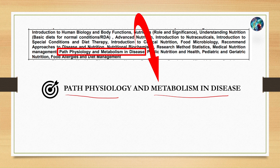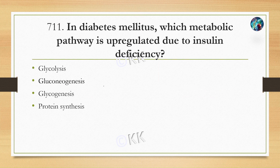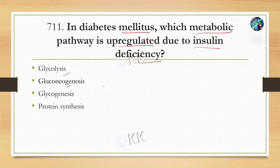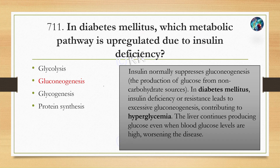Let's start with the first question. In diabetes mellitus, which metabolic pathway is upregulated due to insulin deficiency? Option A: glycolysis. Option B: gluconeogenesis. Option C: glycogenesis. Option D: protein synthesis. The correct answer is Option B: gluconeogenesis.